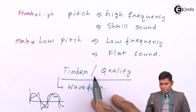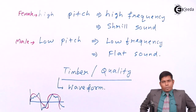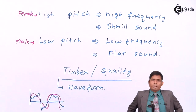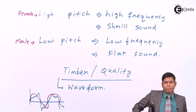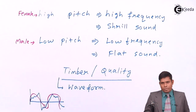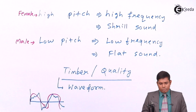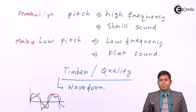This is known as quality or timbre — the property that distinguishes two musical instruments even when pitch and loudness are identical. That is all about the characteristics of sound. We will end here and the next video will deal with some numerical problems. Thank you.